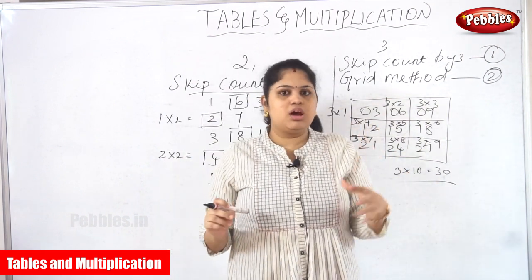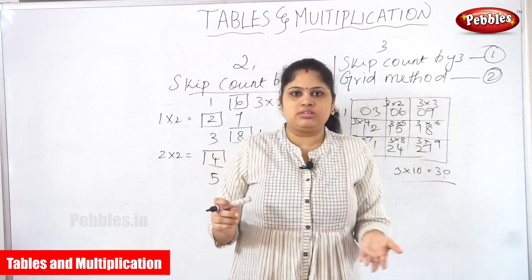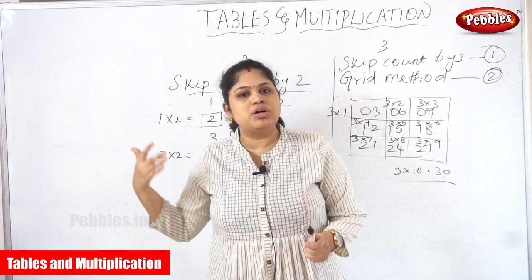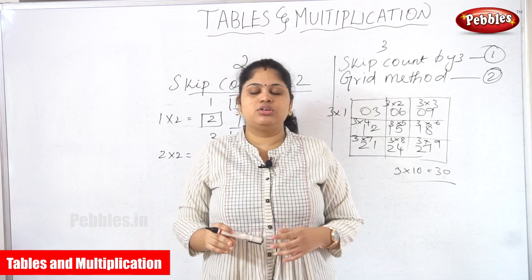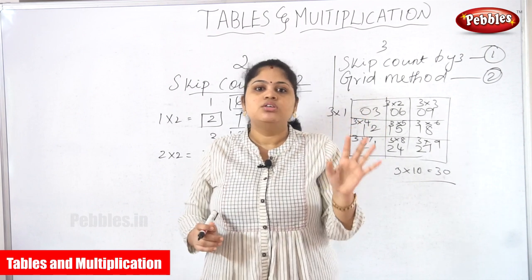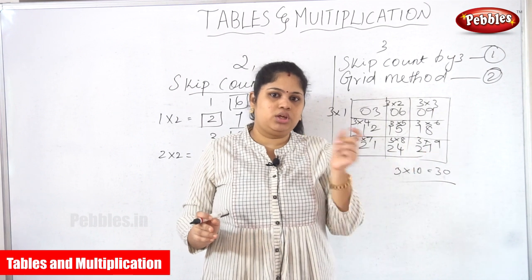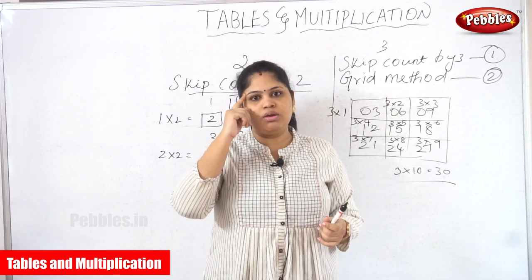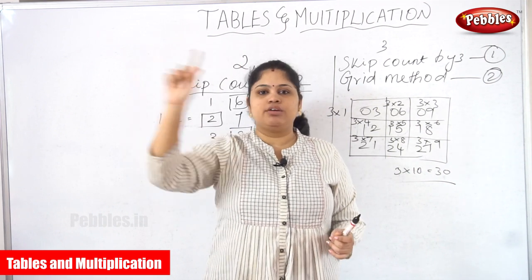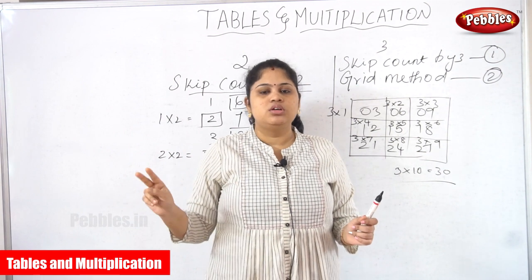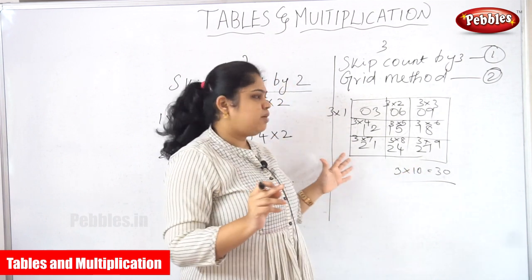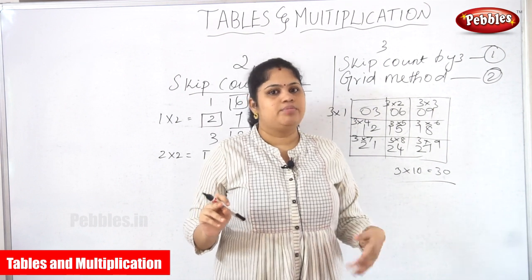The main disadvantage of learning tables using techniques like the grid method or skip counting method is that you become too dependent on drawing. For example, if I ask what is seven into three, you should immediately say twenty-one. But instead, if you are drawing a grid and putting numbers first, there is no use. You should memorize the order of numbers clearly so you can answer instantly. That is a major disadvantage for kids relying solely on these methods.